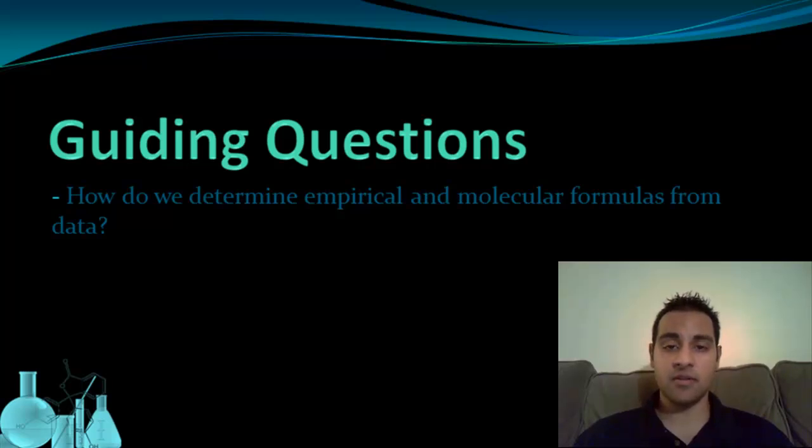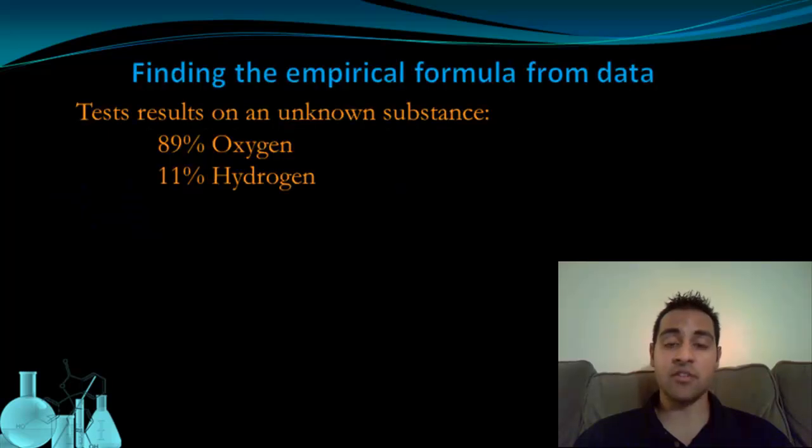Say we have an unknown substance. We can run tests on that substance to try and figure out what it's made up of. If we do those tests, we'll likely get back information that looks like this. This data tells us the percent composition of elements in the unknown substance, and I can use this data to find the empirical formula of the unknown substance.